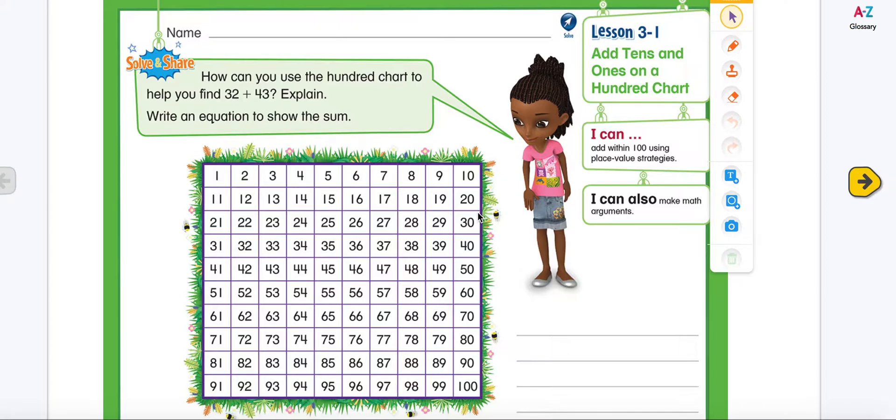So let's look at our solve and share. How can you use the hundred chart to help you find 32 plus 43? Explain. Write an equation to show the sum. Boys and girls, you know that we have addend plus addend equals sum. Our vocabulary word is sum, which means the answer to an addition problem.